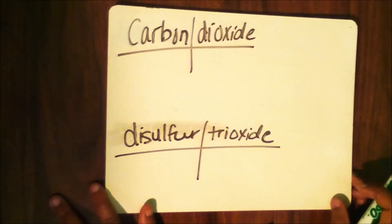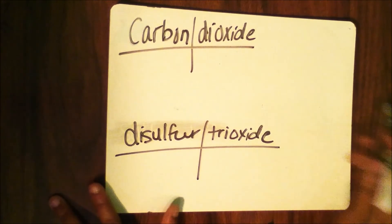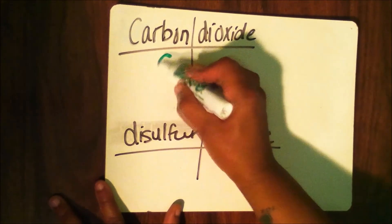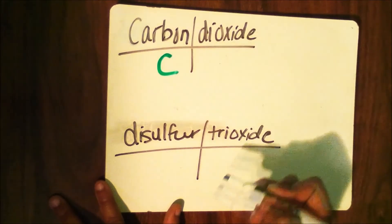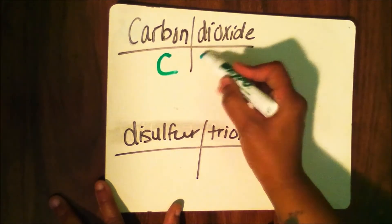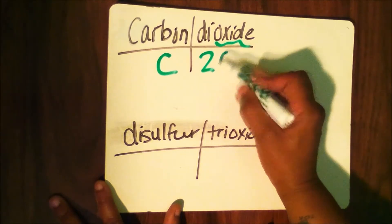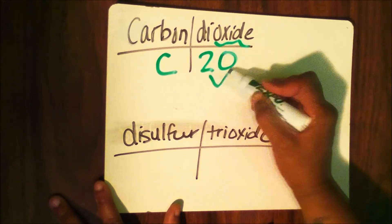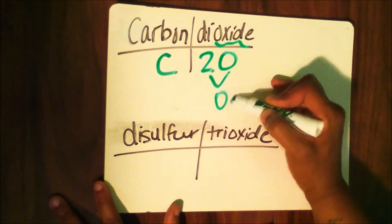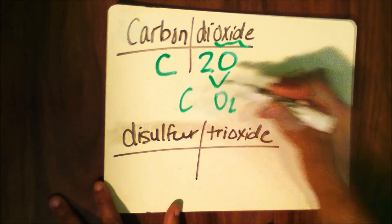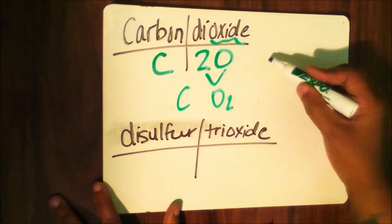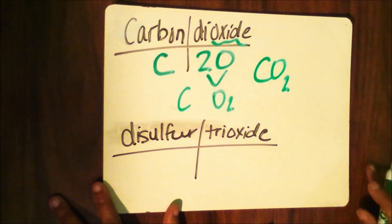The next example is carbon dioxide — everyone knows that one. C is for carbon. Di means two, and the symbol for oxide is O, but you must rewrite the second part as O₂. So the final answer is CO₂.